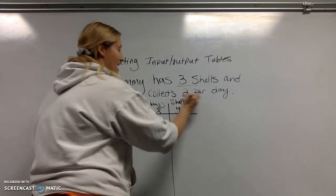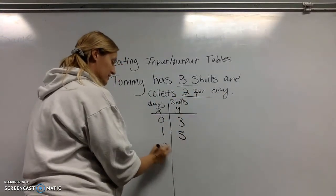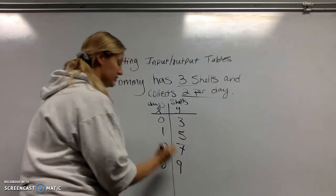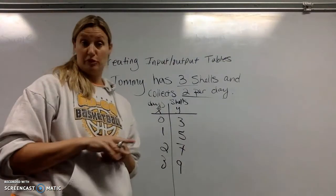So then a day has passed, he's going to get 2 more. So 3 plus 2 is 5. Now 2 days has passed, he gets 2 more than that. 3 days has passed, he gets 2 more than that. And I can create an input-output table from a story problem.